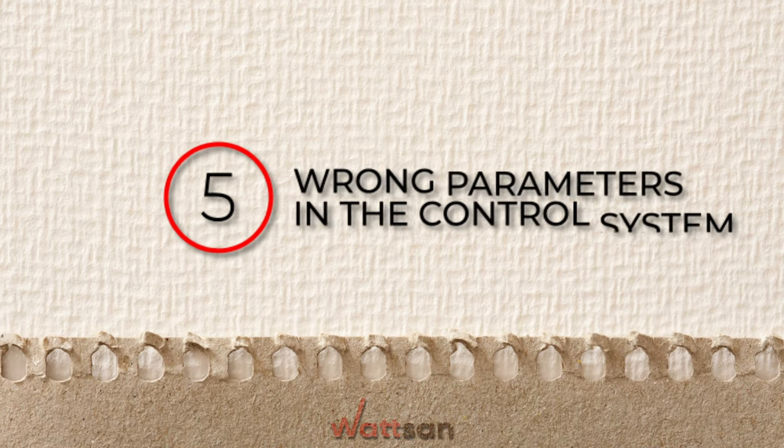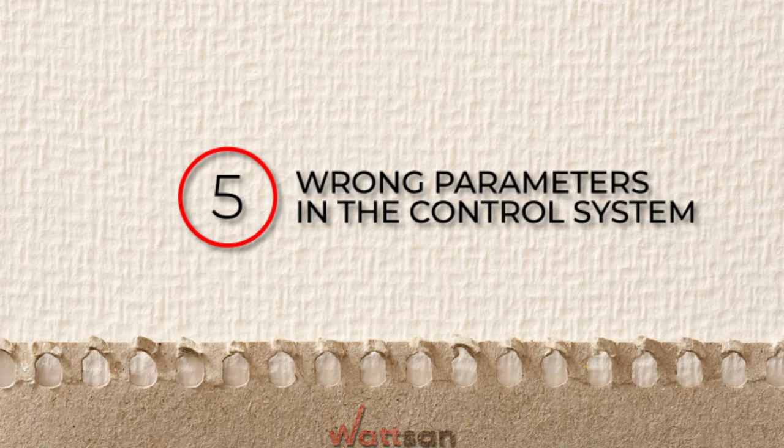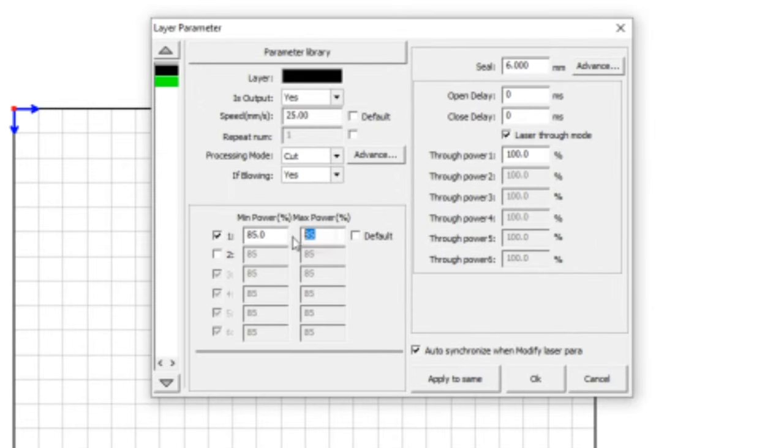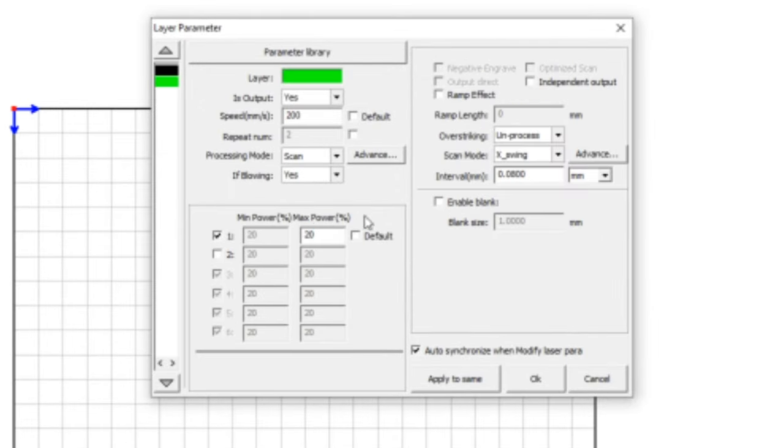5. Wrong parameters in the control system. These are power, speed, acceleration, and step width when engraving. Wrong parameters can lead to rejects.